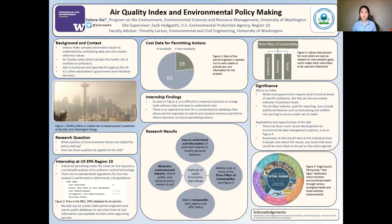Looking more closely at my research question, I was able to identify four features of useful environmental indices. First, the index should be easy to understand and informative. Two examples of this would be the daily weather and the fire hazard signs that are often found at the entrances of parks and trails. The air quality index does well in this because it illustrates the six levels of health risks for various groups of people along with suggestions for altering personal behavior if needed.